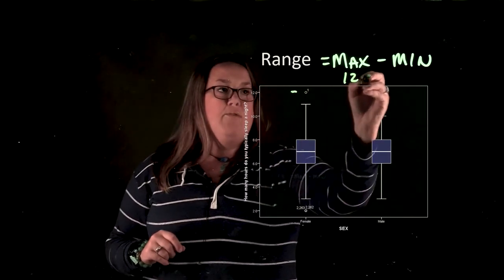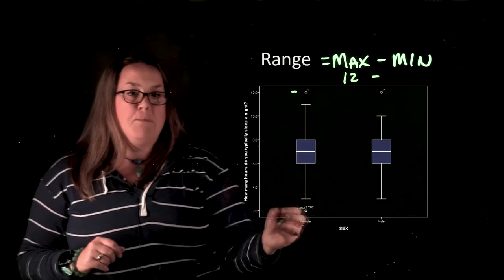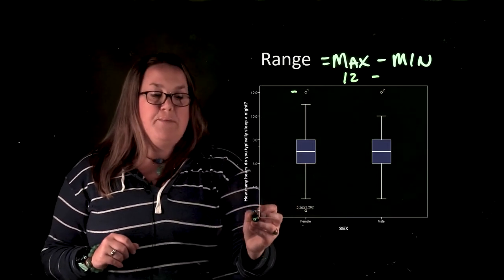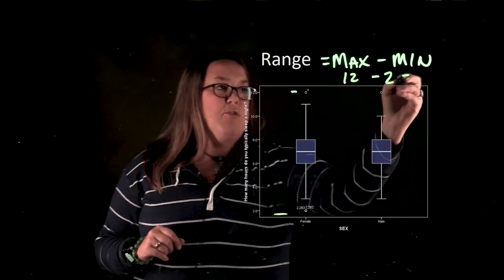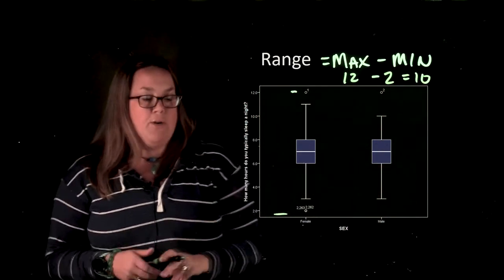So I would have 12 minus, and then I would take the minimum. So for females, it appears that their minimum is actually at two. So for the females, they have a range of 10.